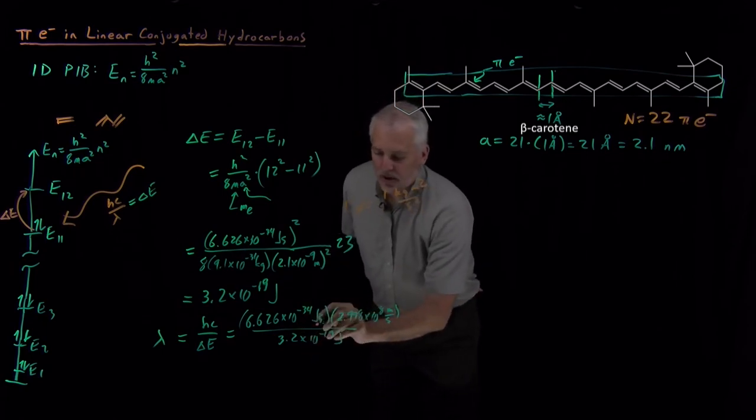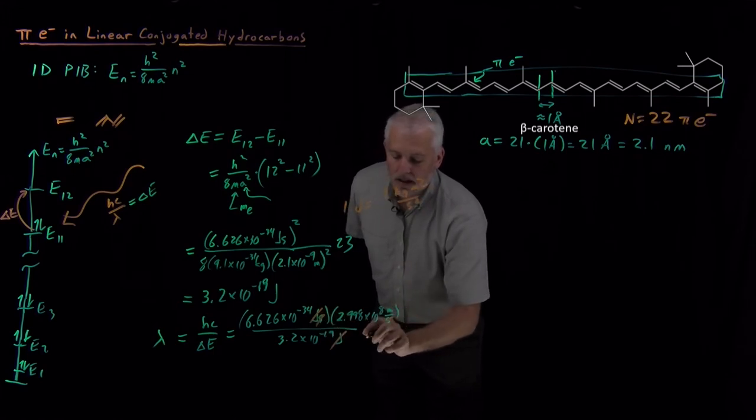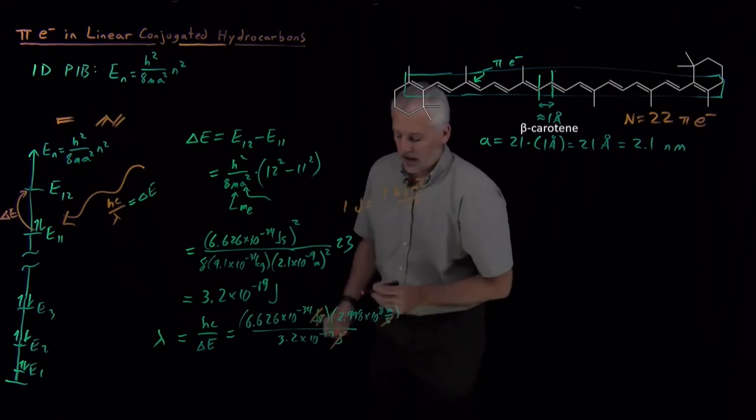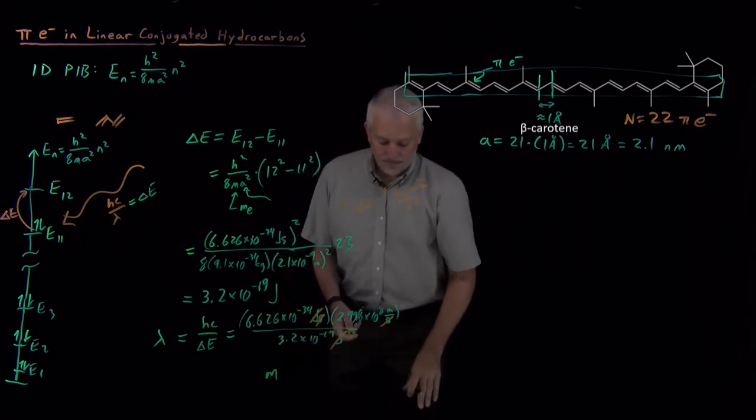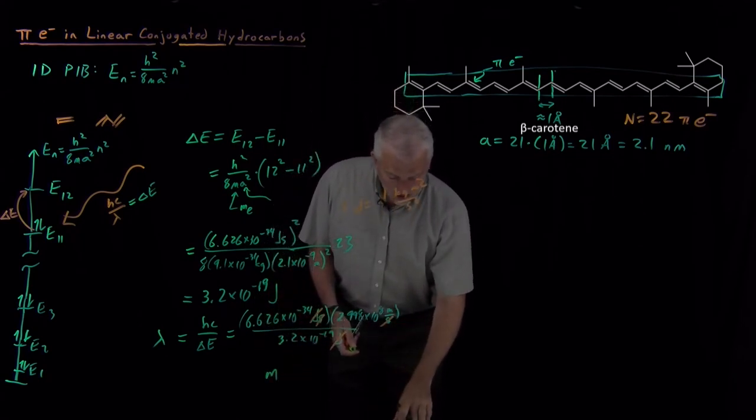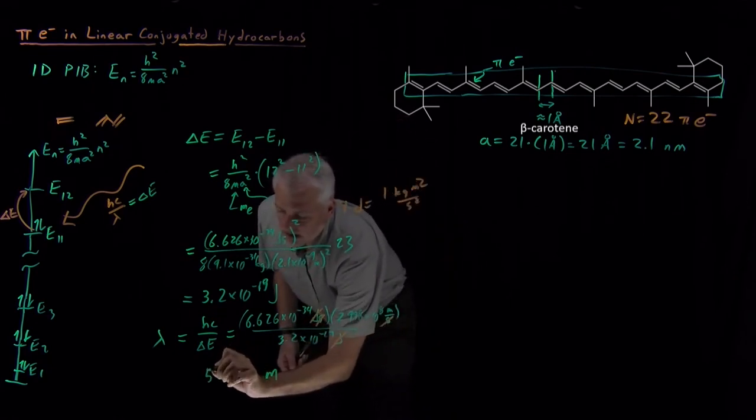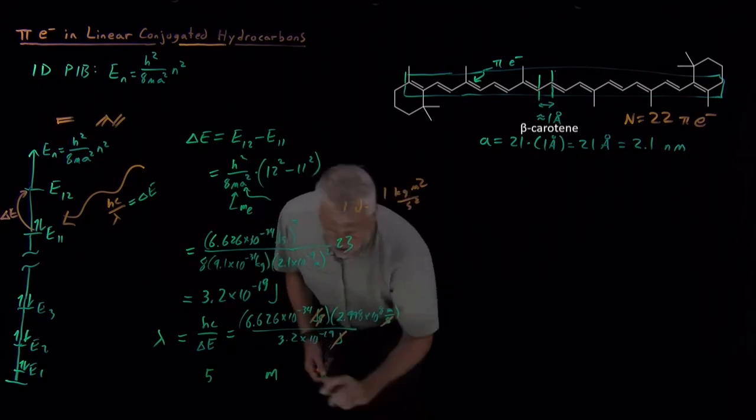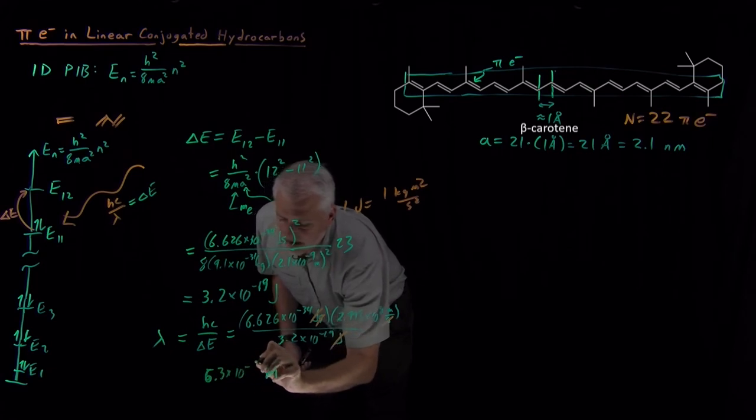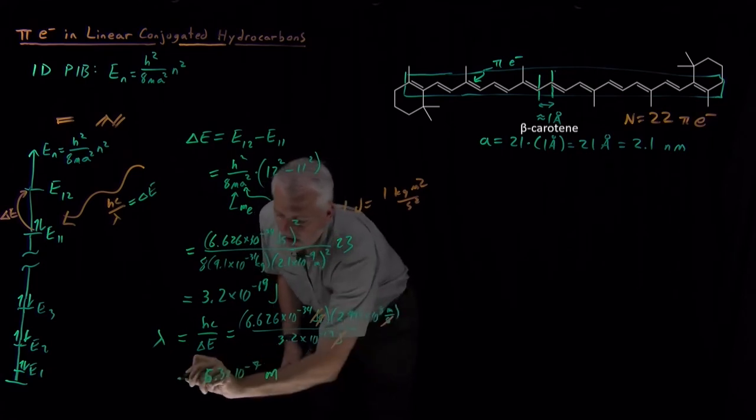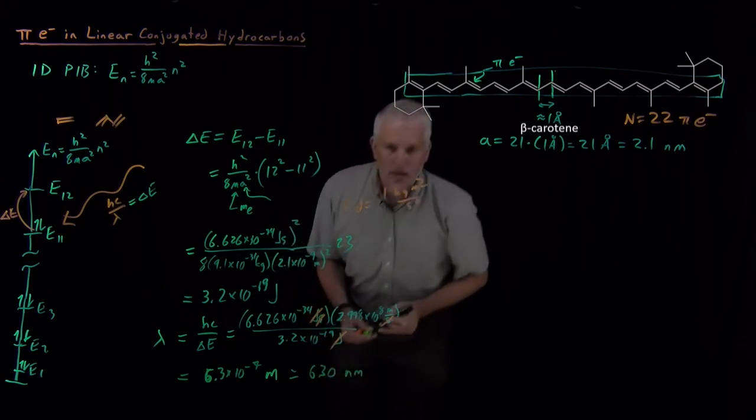And in the second expression, I've got a joule on top, joule on bottom, seconds on top, seconds in the denominator. So all I'm left with at the end is meters, which is good because those are the units that a wavelength should have. And when I plug those numbers into the calculator, I find 6.3 times 10 to the minus 7 meters or 630 nanometers.